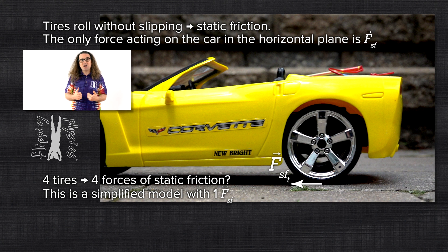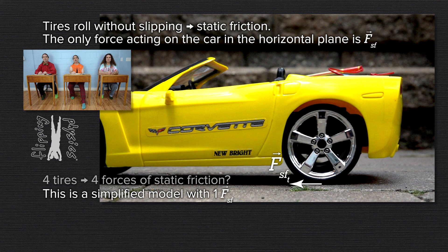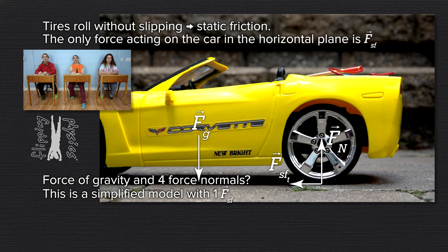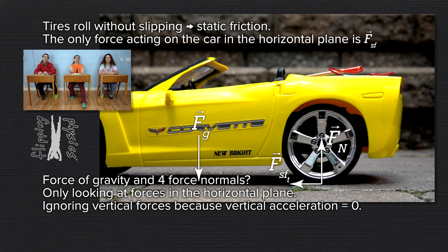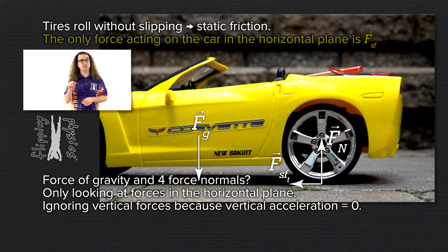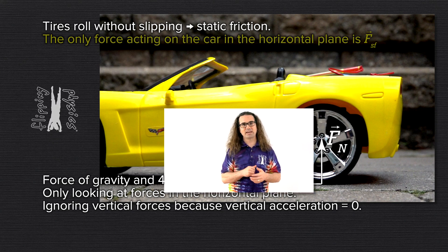This simplified model with one force of static friction is fine for the non-uniform circular motion we are discussing today. Isn't there also a force of gravity acting down on the center of mass of the car and four normal forces acting up on the car, one for each tire? Remember, we are only concerning ourselves with the forces which act in the horizontal plane the car is moving in, because there is no acceleration perpendicular to the horizontal plane. The only force acting on the car in the horizontal plane is the force of static friction.